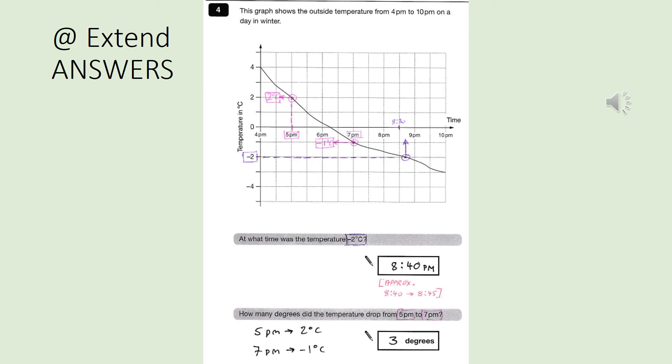How many degrees did the temperature drop from 5 p.m. to 7 p.m.? 5 p.m. it was 2 degrees. 7 p.m. it was minus 1, which has a difference of 3 degrees. And that is positive 3, not negative 3. So your answer should just be 3 degrees.